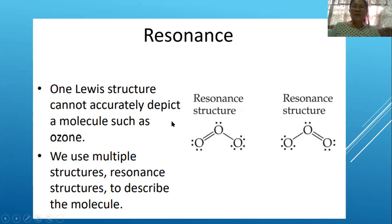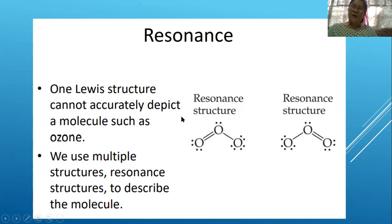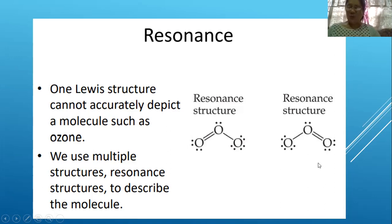One Lewis structure cannot accurately represent a molecule like ozone, so we write multiple resonance structures. These structures are all correct — the double bond can be on the left, the right, or both. This is what is meant by resonance: we can write the Lewis structure in two or more equivalent ways.